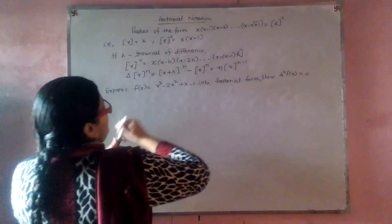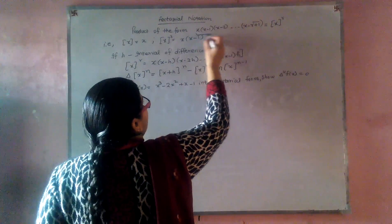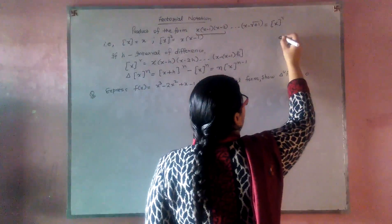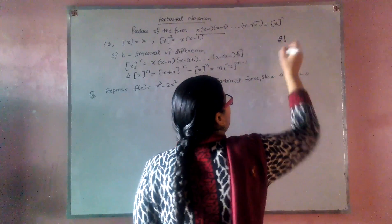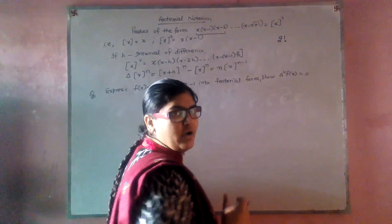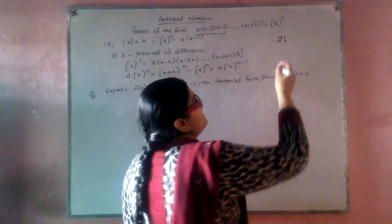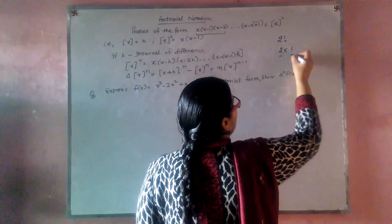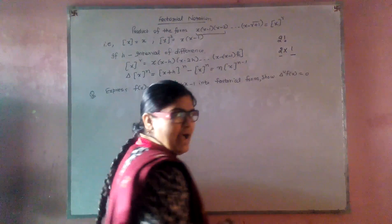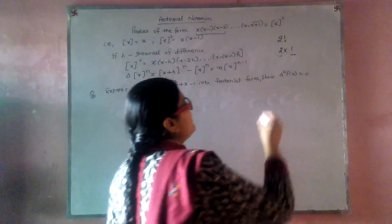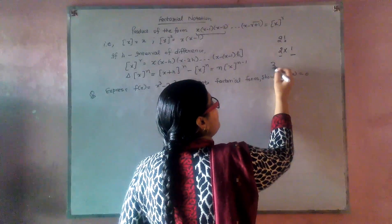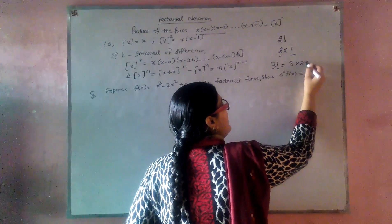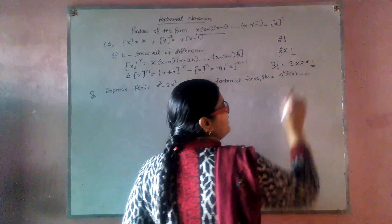If we write this in the form of — if we are talking about 2 factorial, then what does it mean? It means we reduce the number by 1. That means if we are talking about 3 factorial, it becomes 3, then 2, then 1, up to 1.